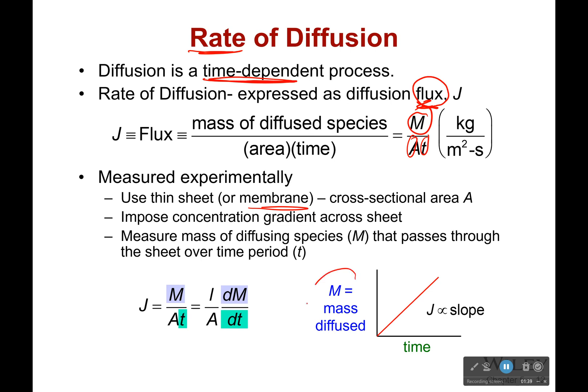And so we'll see, okay, we have the mass of the diffused species over here, we have time, and we'll have this line. And that slope is going to be proportional to our flux.